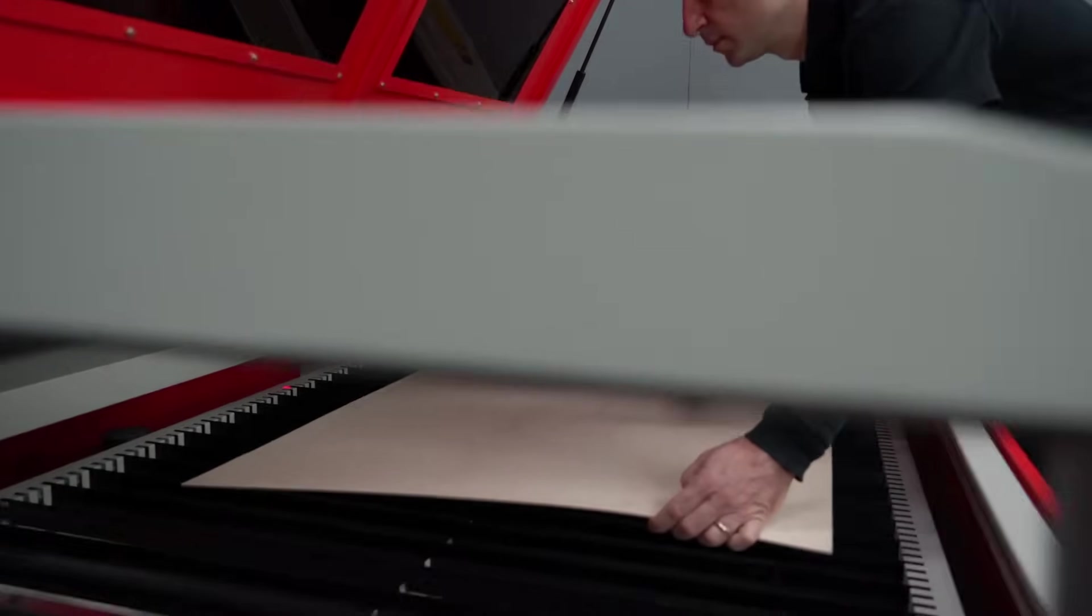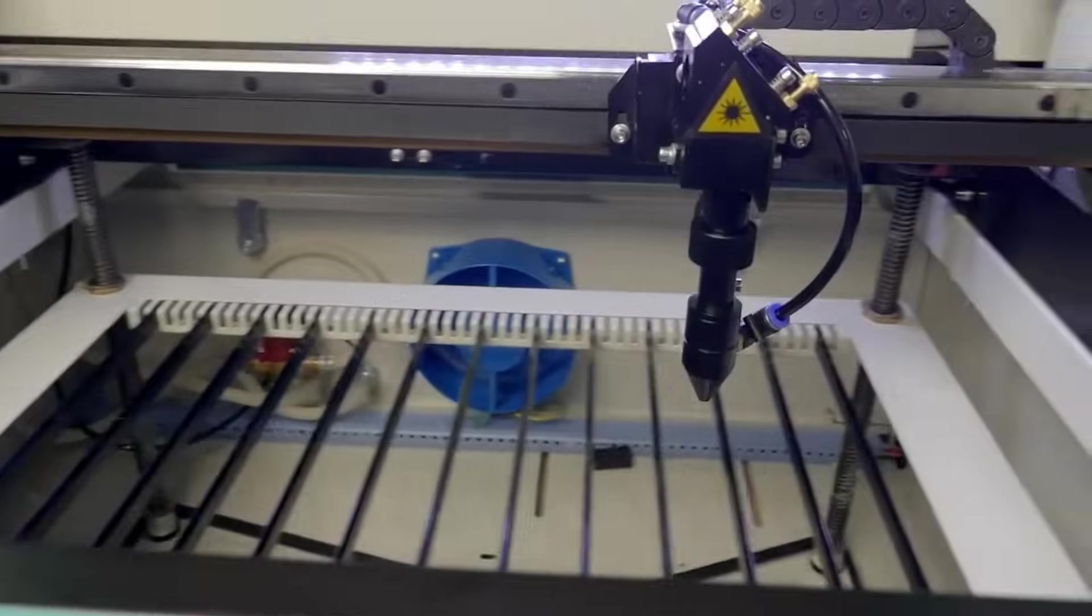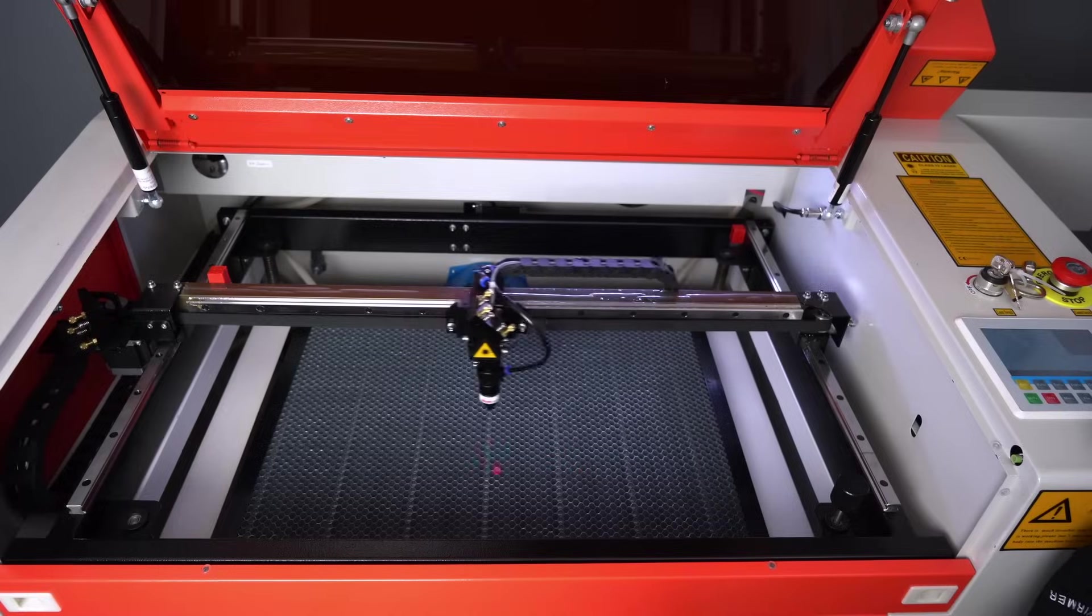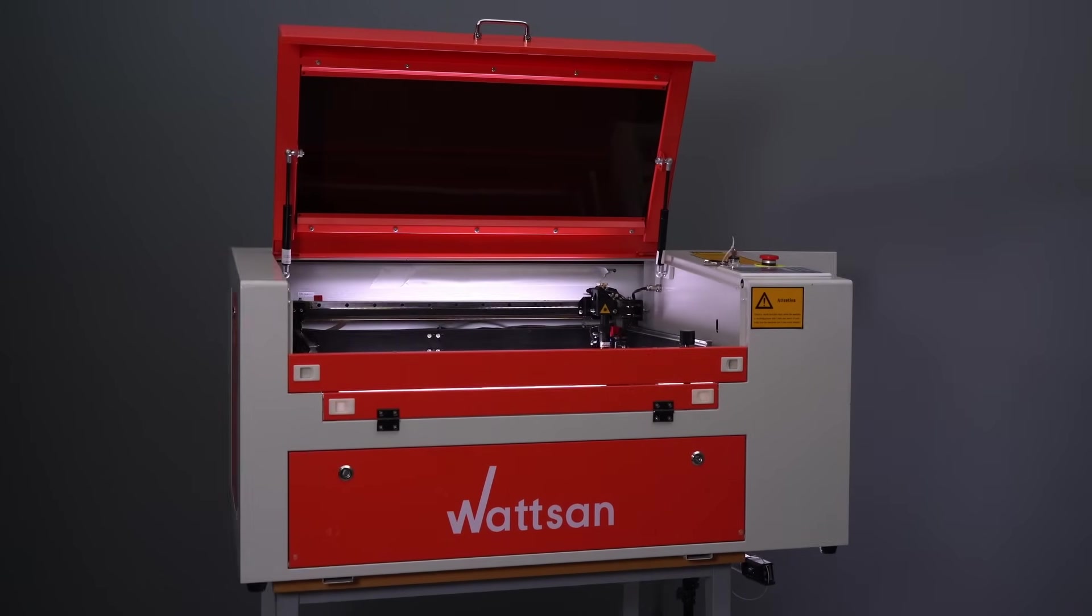But if you don't need such a large working area, Verma offers smaller machines, such as the Watson 0503 or Watson 6040. With these machines, you'll also be able to produce such a lamp.